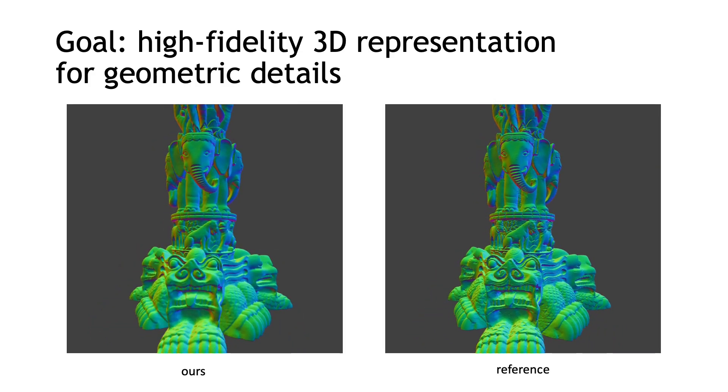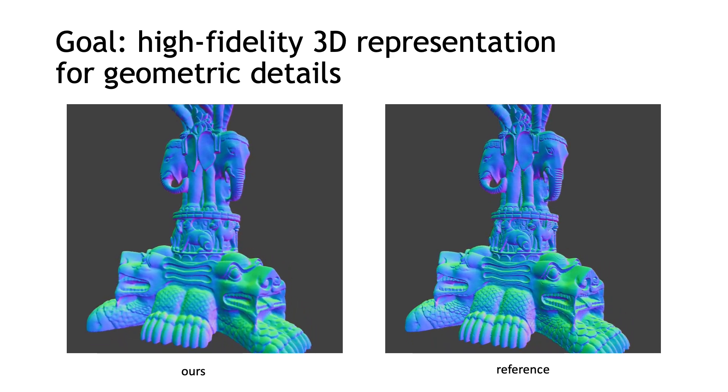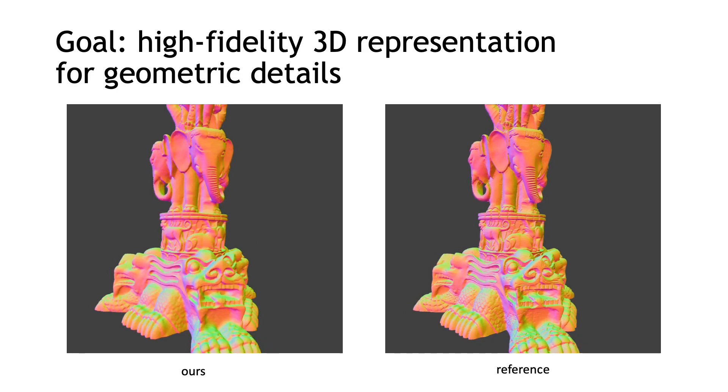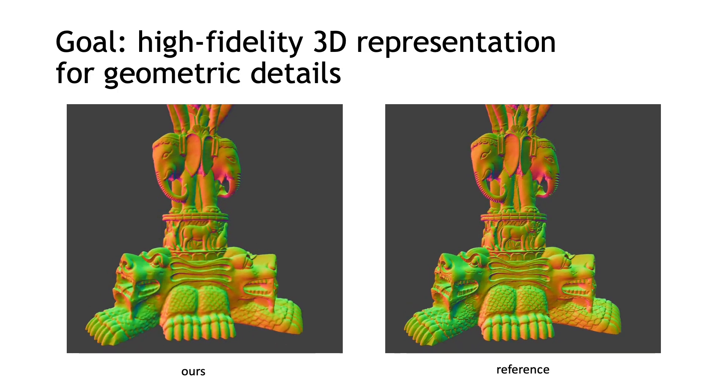Neuroimplicit functions have theoretically infinite resolution, but in practice, their ability to represent high-frequency geometry details is limited by neural network's spectral bias.